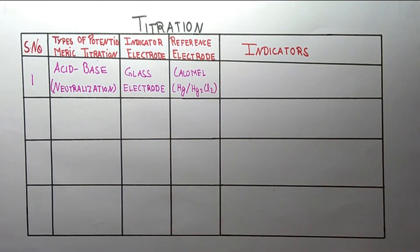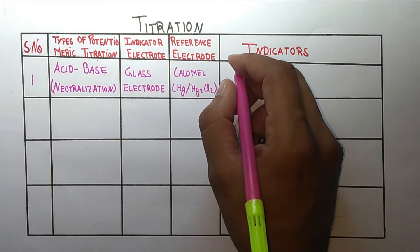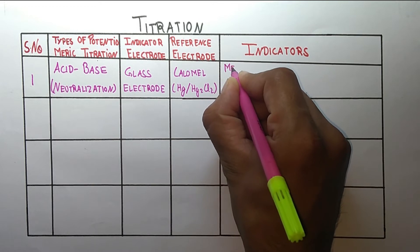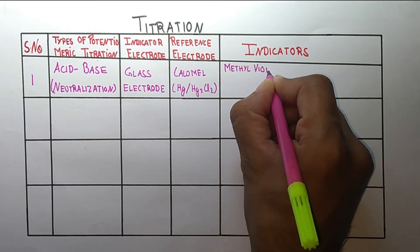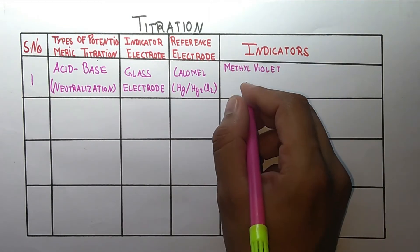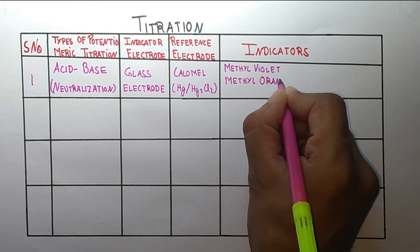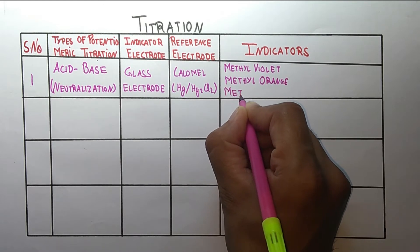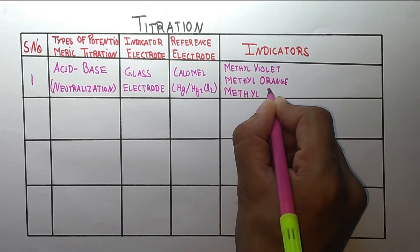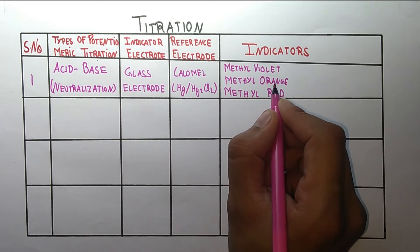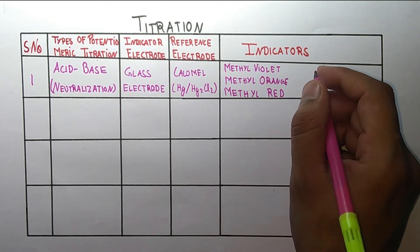What are the indicators used in acid-base titration? The indicators are methyl violet, methyl orange, methyl red, and bromophenol blue.